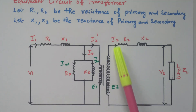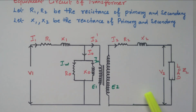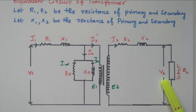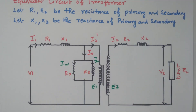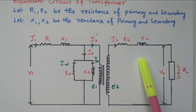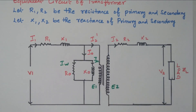We can transfer all the parameters of the secondary winding to the primary winding in order to frame the equivalent circuit. This makes further calculation easier — transferring all parameters from secondary to primary simplifies the process.